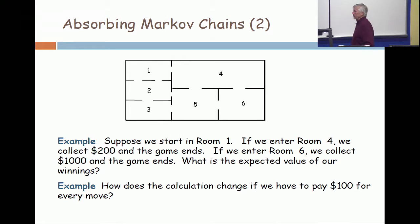What's the expected value of our winnings? Well it's at least $200 but in fact it's more than $200. Because you might get lucky and get to 6 before you get to 4. So what's the expected value?